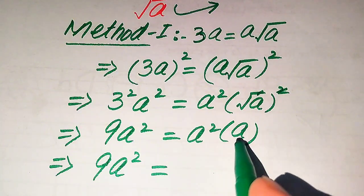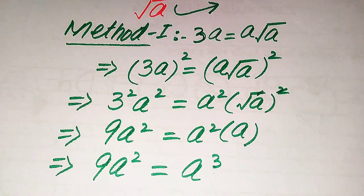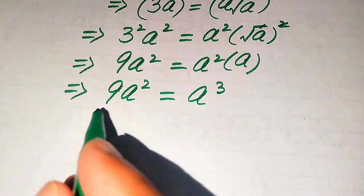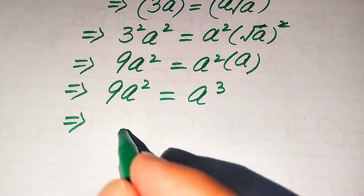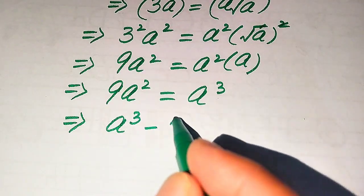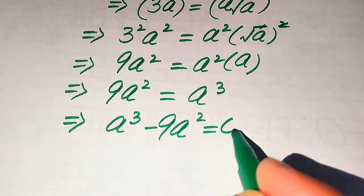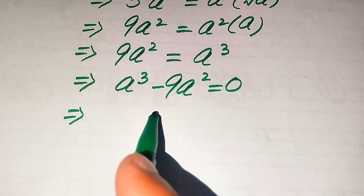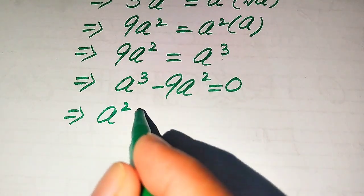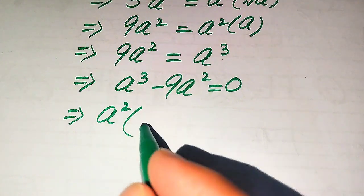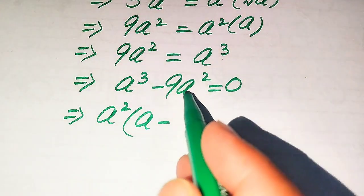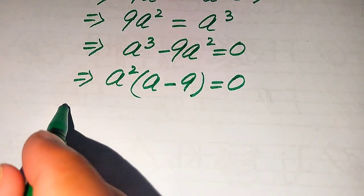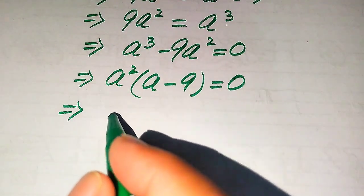So 9a² equals a² times a, which equals a³. Since our target is to find the values of a, we move 9a² to the right-hand side — it was positive, so it becomes negative — giving us a³ minus 9a² equals 0. Both terms involve a², so we factor out a².